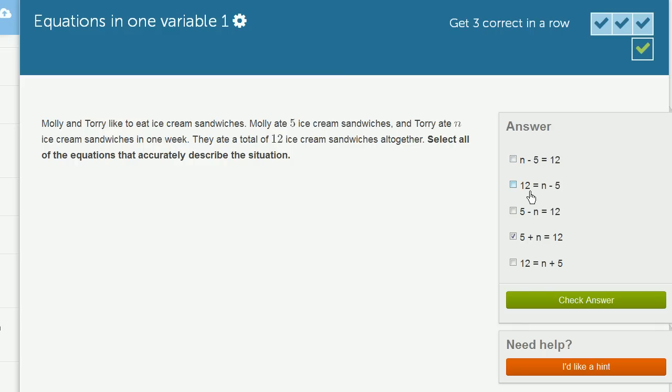Here we have 12 is equal to N minus 5, which is an equivalent statement to this top one, which we already know is not true. All they did is swap both sides of these equalities. So that's not true.